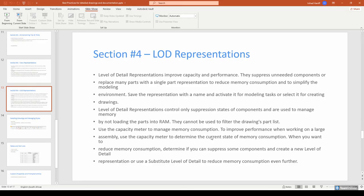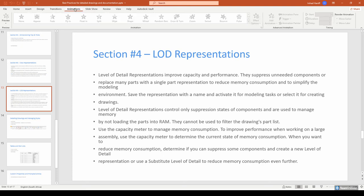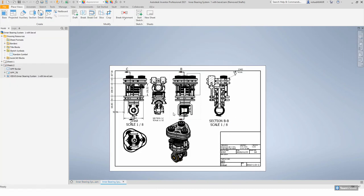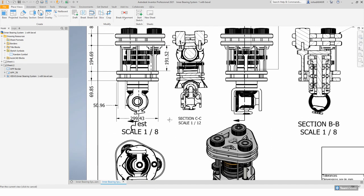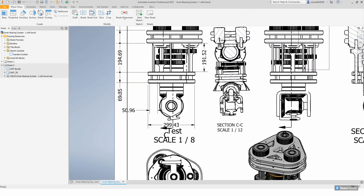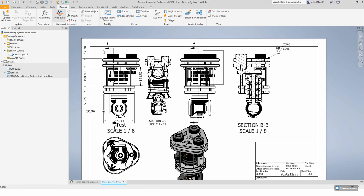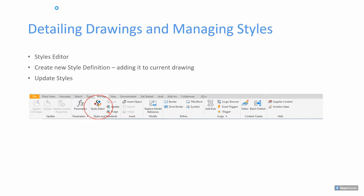Detailing your drawings and managing your styles — this is where most people get confused. We often get inquiries from customers asking how to change something as simple as their arrowheads or text size, and whatever they try doesn't seem to work. Let's look at how to change those things. In the Manage tab, you'll find the Styles Editor. Clicking on it takes a little bit of time to open.